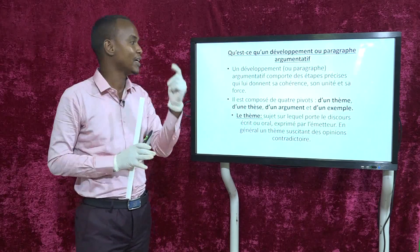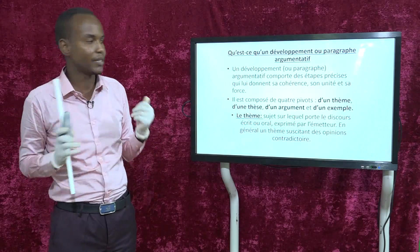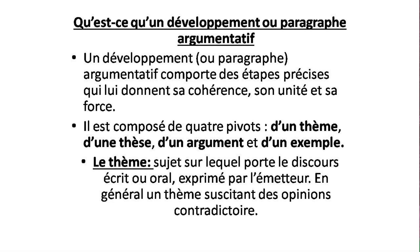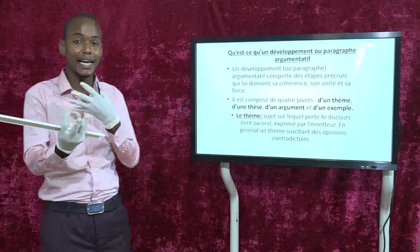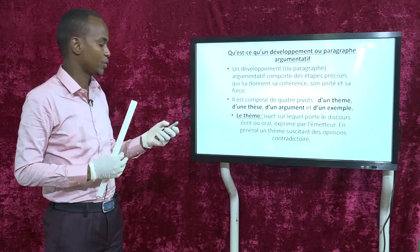La première étape : le thème. C'est un sujet sur lequel porte le discours — ça peut être écrit ou oral. Dans le texte argumentatif, le thème c'est le sujet exprimé par l'émetteur. En général, un thème suscite des opinions contradictoires, c'est-à-dire qui amène les gens à se confronter entre eux.